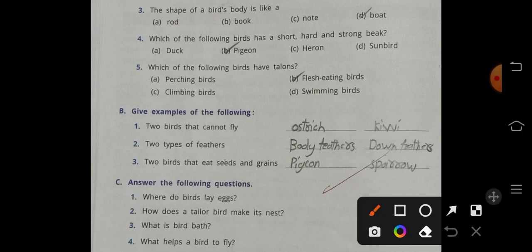Give two examples of birds that cannot fly: ostrich and kiwi, you can try penguin also. Two types of feathers: body feathers, down feathers, and flight feathers. Two birds that eat seeds: pigeon and sparrow.